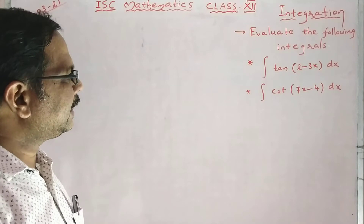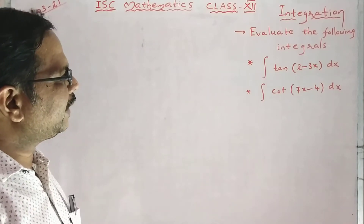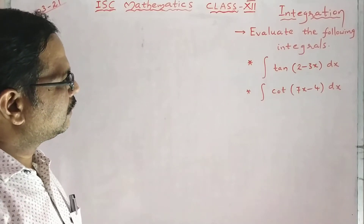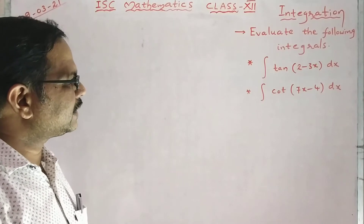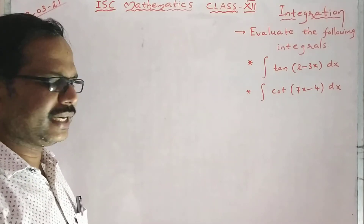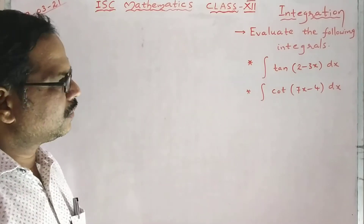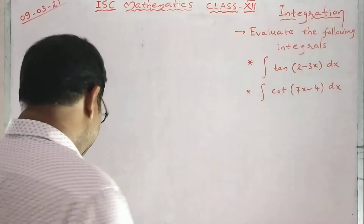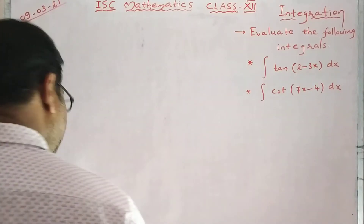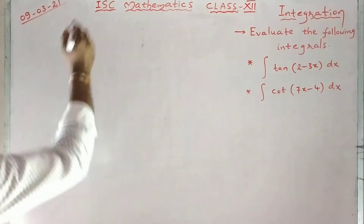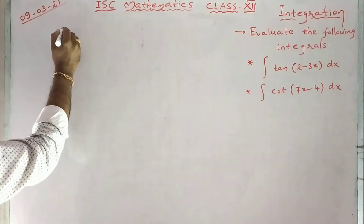Integral tan of (2 minus 3x) dx. Integral cot of (7x minus 4) dx. For doing these problems, we should have some concepts here.